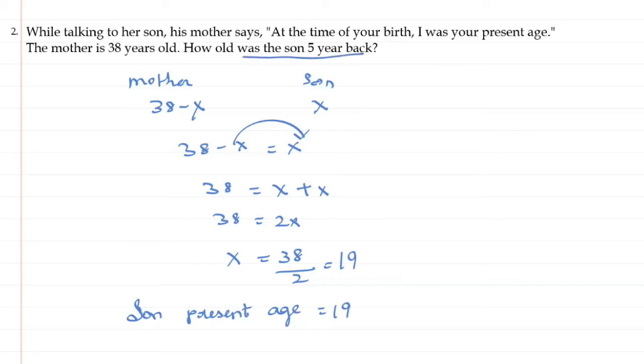The question asks how old was the son 5 years back. So 5 years back equals present age minus 5, which is 19 minus 5, equals 14 years.